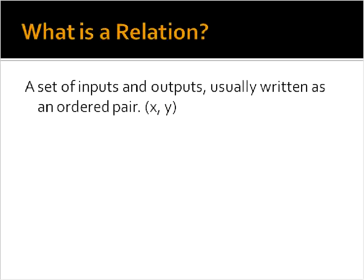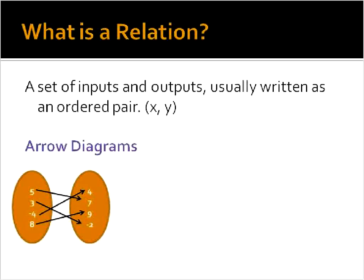There are three major ways that you can show relations visually. First, you can show an arrow diagram like this. You'd show numbers inside of the first circle or the second circle, or whatever you want. But this relation then is 5, 7, 3, negative 2, negative 4, 4, and 8, 9. That would be the relation here shown by this arrow diagram.